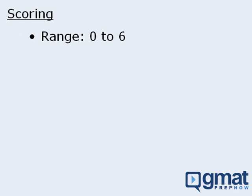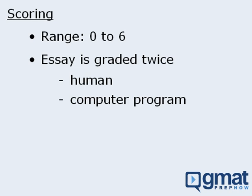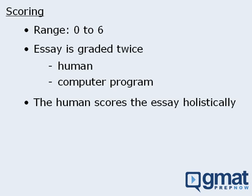Speaking of scoring, your score on the AWA section will range from 0 to 6. To determine your score, your essay is graded twice – once by a human, and once by a computer program. The human marker is typically a college or university faculty member who will spend no more than two minutes reading each essay, and then assign a score holistically.